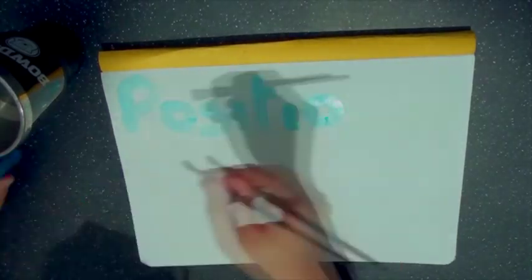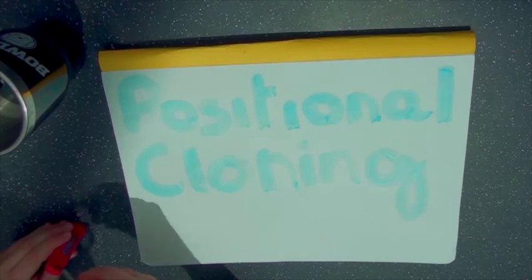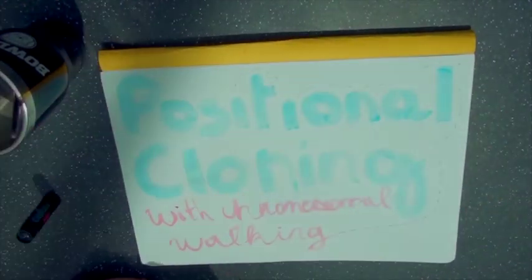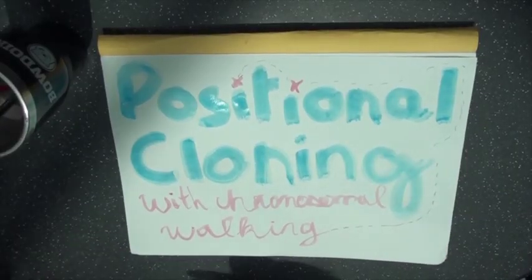Positional cloning with chromosomal walking is a method used to find a gene coding for a specific phenotype by locating its position in the genome. Positional cloning requires mutations in the gene of interest and does not require knowledge of the protein product.